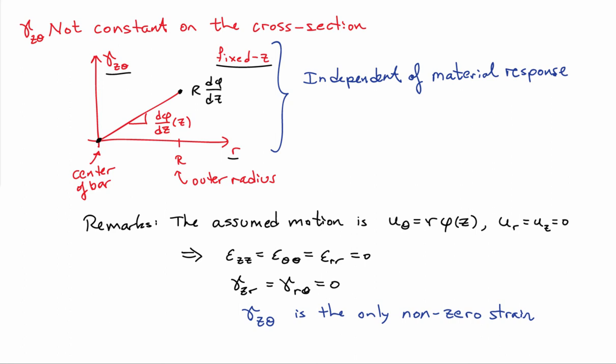The other thing we can point out here is that the other way of stating our assumption on the motion is that the tangential motion, u theta, is equal to R times the rotation phi. And that there is no radial or axial displacements. And if you use this assumption here and plug it into the general relations that connect the three-dimensional displacements to three-dimensional strains in the polar coordinate system, you'll find that all the normal strains are zero, that the gamma Zr and gamma R theta shear strains are zero, and the only non-zero shear strain or strain is gamma Z theta.